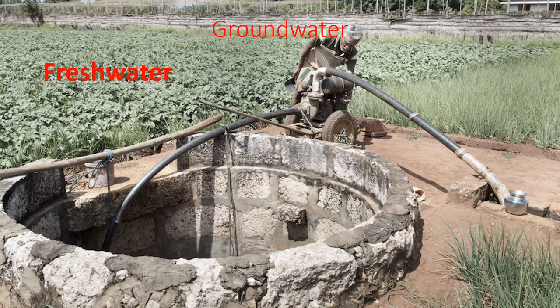Next we have groundwater. Groundwater is fresh water — as water soaks through or percolates through when it infiltrates the ground after precipitation falls, it kind of cleanses and removes a lot of the pollution and minerals that are inside of that water. So by the time it gets down to being actual groundwater, it's fresh water, it's not salty.